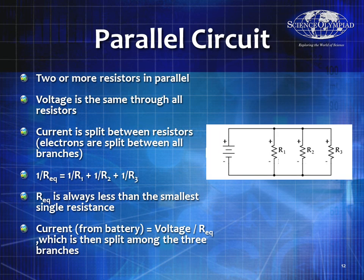Now let's talk about a parallel circuit. In a parallel circuit, you have the same voltage going across all the resistors. Here we have the battery voltage going across R1, R2, and R3 — the same voltage across each. Each resistor will potentially have a different current, and the current coming out of the battery is equal to the sum of the currents through all three resistors combined. The official equation is: 1 over R equivalent equals 1 over R1 plus 1 over R2 plus 1 over R3.